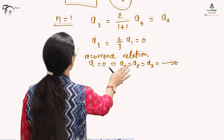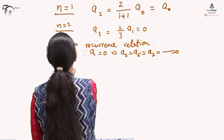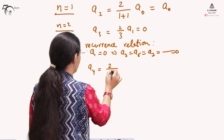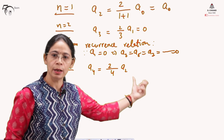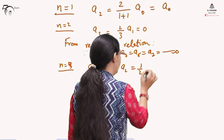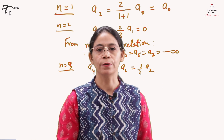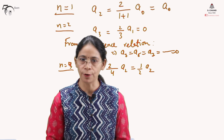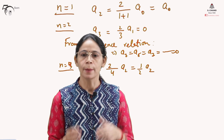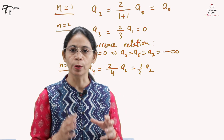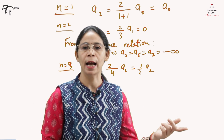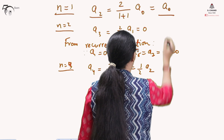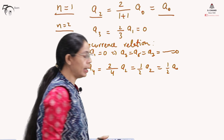We have a₂ and now need to find a₄. Setting n equals 3 gives a₄ equals (2/4)a₂, which is half of a₂. Since a₂ was expressed in terms of a₀, and we can only have one arbitrary constant a₀ (because a₁ is already 0), a₄ must be written in terms of a₀ only. Therefore a₄ equals (1/2)a₀.